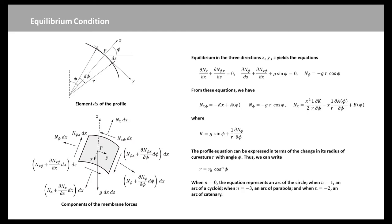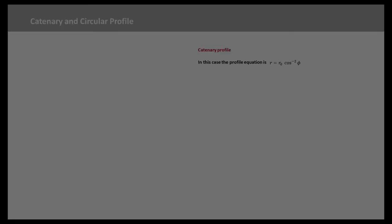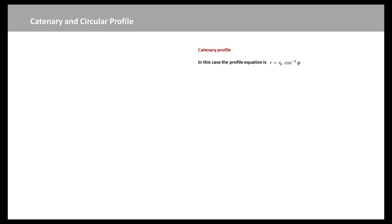In this video, we will show the catenary profile and circular profile. In the catenary case, the profile equation is expressed here. Then we substitute the R equation into N_phi equation, so that we will have the N_phi expression for the catenary profile. Then we can substitute R and N_phi into k equation, and obtain k equals 0.